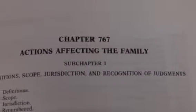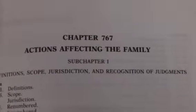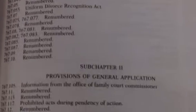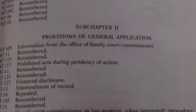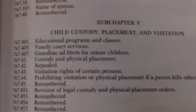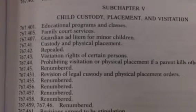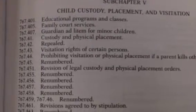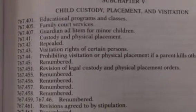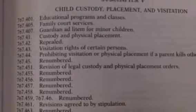Sometimes when you can't find exactly what you want, you go back to the beginning of the chapter, and you see chapter 767 is about actions affecting the family. Then you can look at the different subsections — here's general application. You can see that there is a whole subchapter on child custody, placement, and visitation. We can look through here and see some of the statutes. We want to look at visitation rights of certain persons under 767.43.